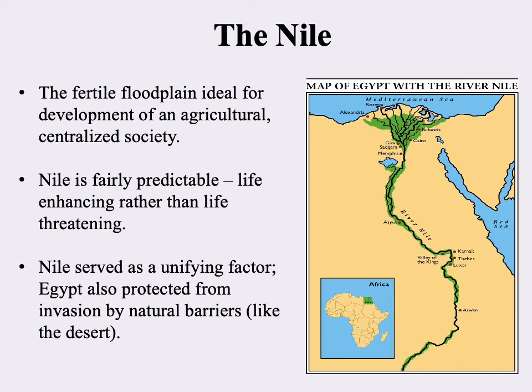That has some bearing even on religious developments. Another very important factor is the Nile River serves to unify the various points along it. It's very easy to move up and down the Nile and feel connected. Upper Egypt is further south into the interior, upriver, but it's very easy for people to move back and forth and develop a shared idea of culture and being part of the same society.